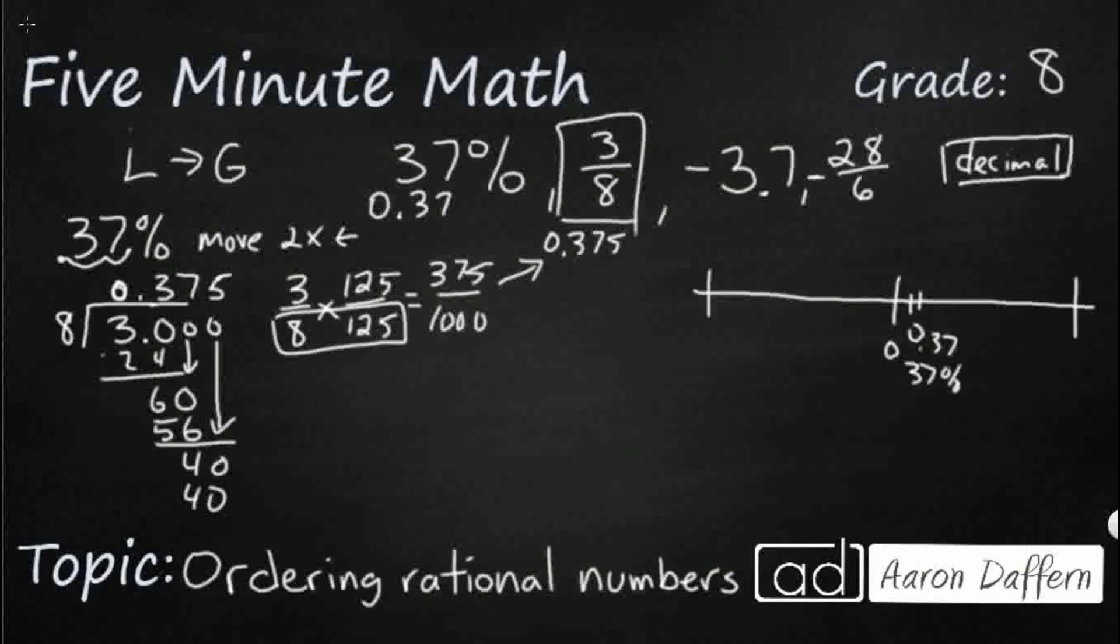I'm going to make this the 0.37 or the 37%. Right next to it, just a little hair past it, it's going to be 3 eighths or 0.375. But I don't know where to put the negatives yet until I get this negative 28 sixths. So I'm just going to divide my 6 into my 28.